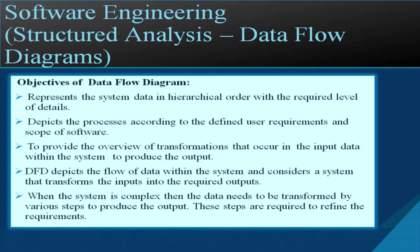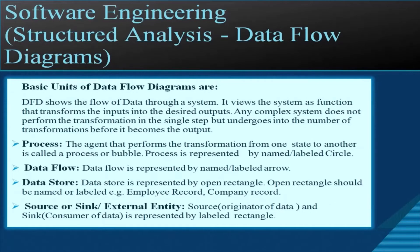When a system is complex, data needs to be transformed through various steps to produce the output. The basic units of a data flow diagram are: process, data flow, data store, and source and sink. DFD views the system as a function that transforms inputs into desired outputs. Any complex system undergoes multiple transformations before producing output. The first unit is the process — the agent that transforms data from one state to another, sometimes called a bubble, represented by a named or labeled circle.